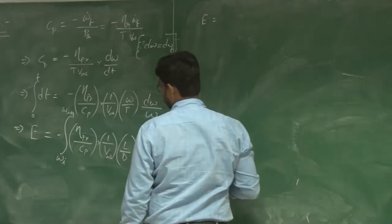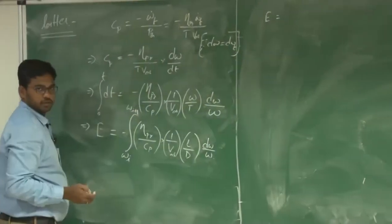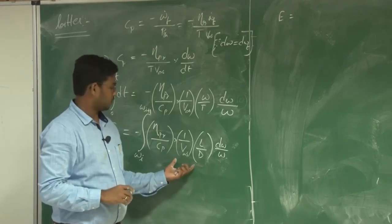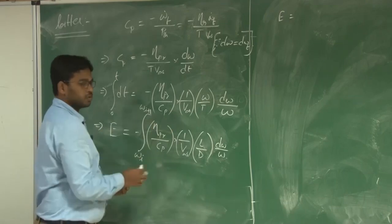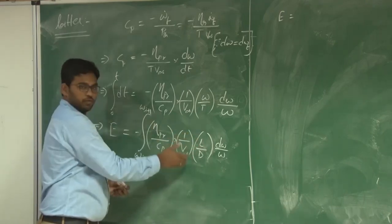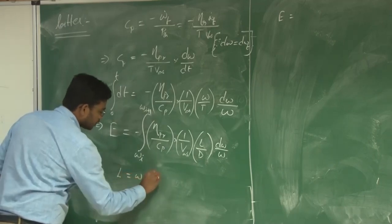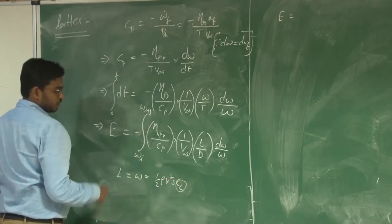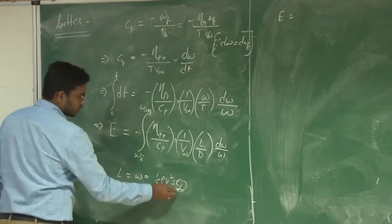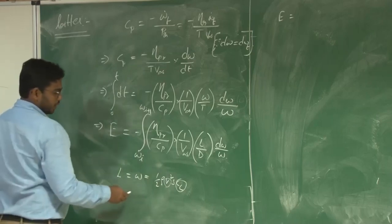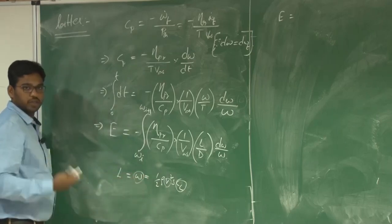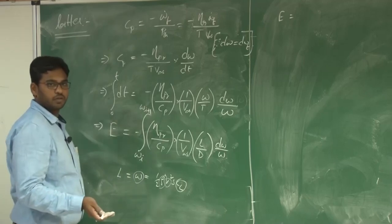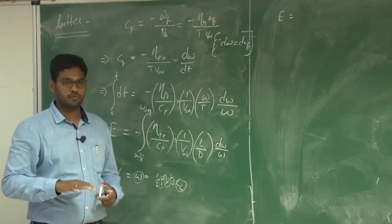There are two ways to integrate this. Case 1: constant velocity and constant CL during cruise. If both lift coefficient and velocity remain constant, then as fuel is consumed with L = W = ½ρV²S·CL, the weight changes continuously. The only variable that must change is density, meaning the aircraft gains altitude — this is known as cruise climb.